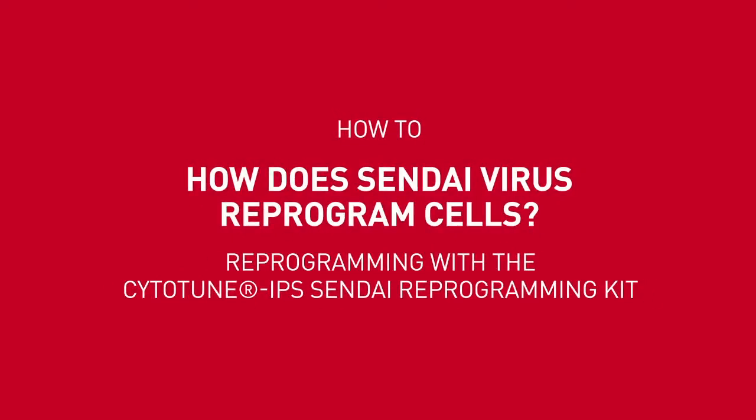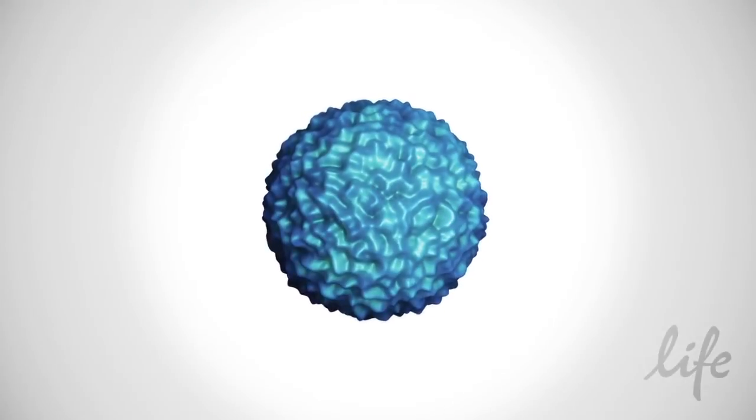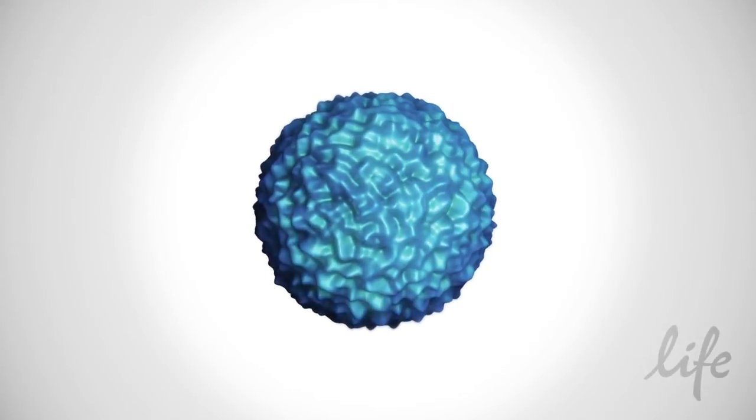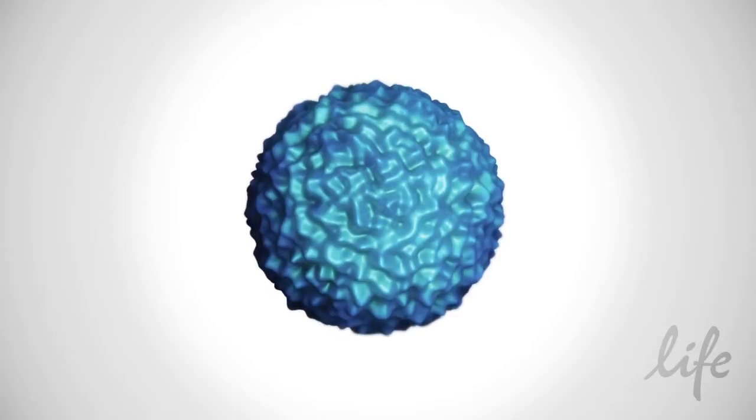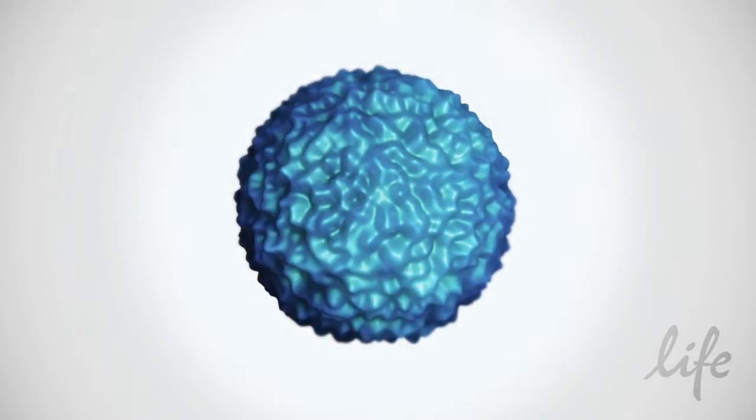How does Sendai virus reprogram cells? Induced pluripotent stem cells, or iPSCs, are genetically reprogrammed somatic cells that exhibit a pluripotent stem cell state similar to embryonic stem cells.